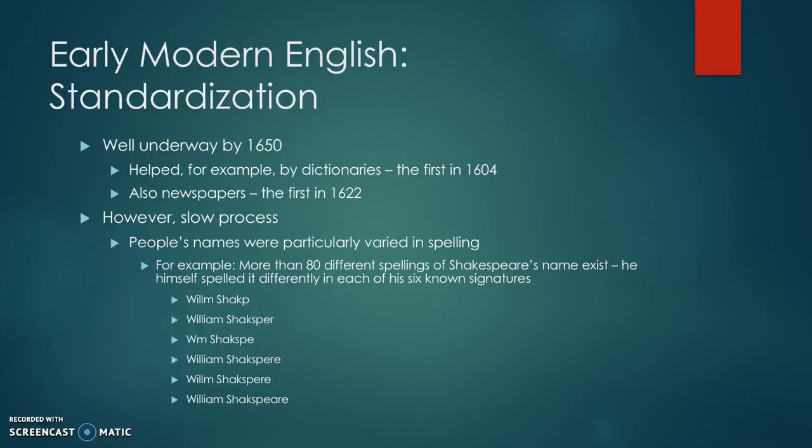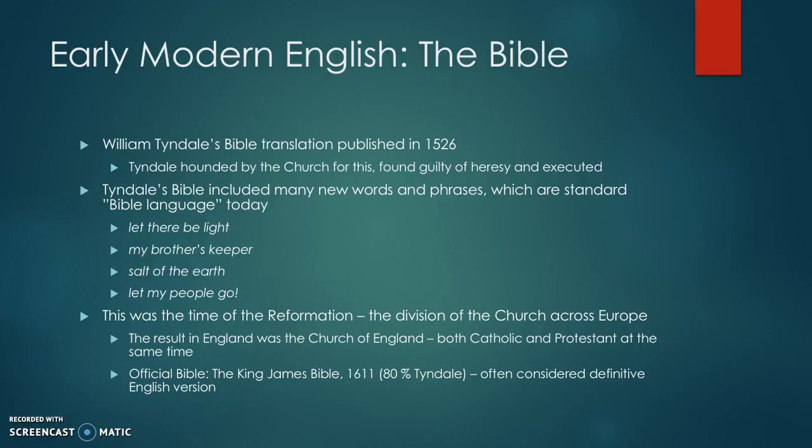If people couldn't even spell their own names the same way all the time, how should everybody else? Also regarding the Bible — a man called William Tyndale published a translation of the Bible in 1526. Tyndale was hounded and persecuted by the church. They caught him, found him guilty of heresy — crimes against religion — and he was executed for publishing the Bible in English. Tyndale's Bible included many new words and phrases which are sort of standard Bible language today, for example: 'let there be light', 'my brother's keeper', 'salt of the earth', and 'let my people go'.